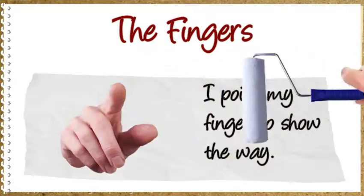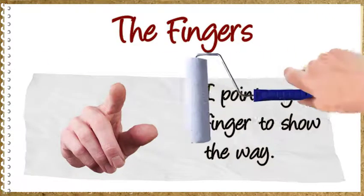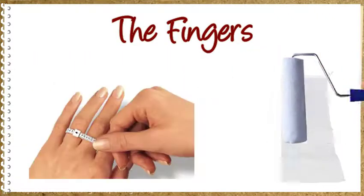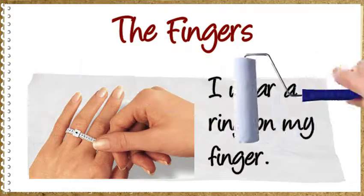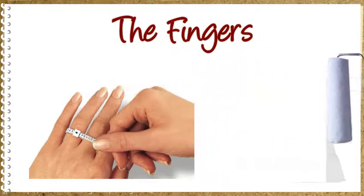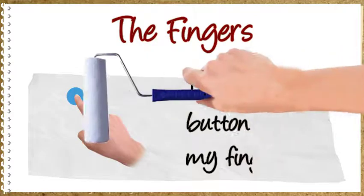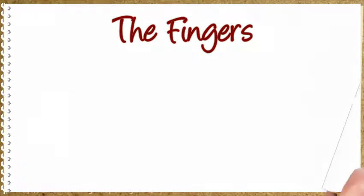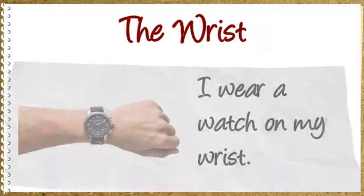The fingers. I point my finger to show the way. I wear a ring on my finger. I touch the button with my finger. The wrist. I wear a watch on my wrist.